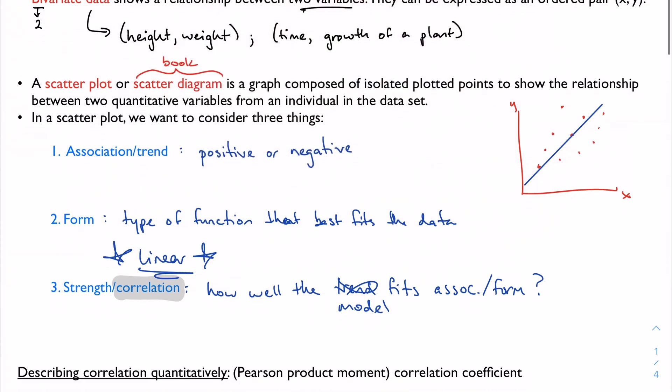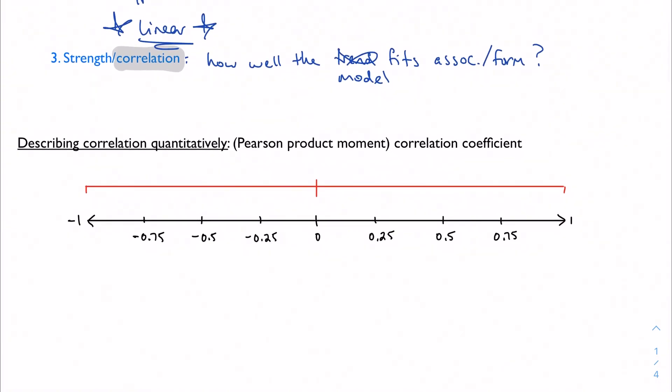We do that with something called the Pearson product moment correlation coefficient, which is a mouthful. The book will use PMCC. Mathematically we abbreviate this with R. On my number line here, we're going to categorize R. R falls between 1 and negative 1, inclusive.